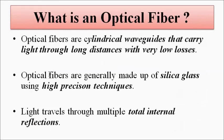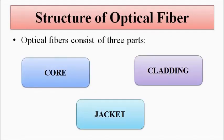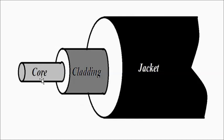Optical fibers are cylindrical waveguides that carry light through long distances with multiple total internal reflections. They have three main parts: the core, cladding, and jacket. The core is the innermost cylindrical portion, cladding is the cylindrical coating over the core, and the jacket is the outermost covering to protect the core-cladding combination. The core has the maximum refractive index, and the cladding has a refractive index lower than that of the core. It is the core-cladding diameters and refractive index that control the different types of optical fibers.